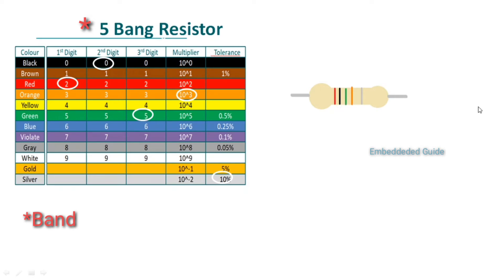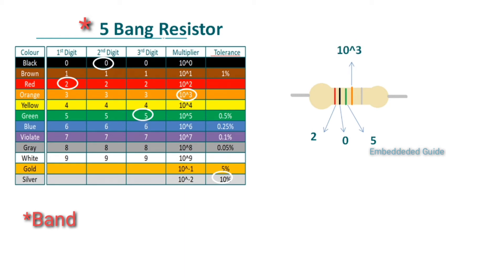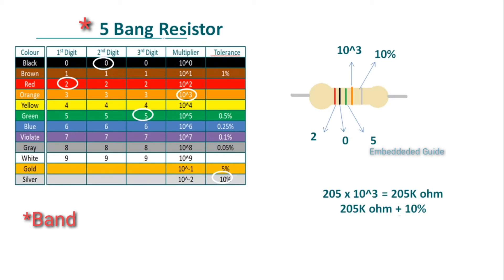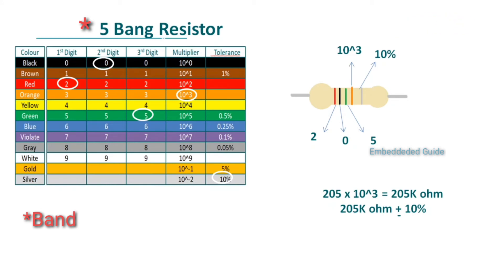Let's check the value of a 5-band resistor example. In this 5-band resistor, we have 5 color bands. The first color band is red — value 2. The next color band is black — value 0. The third color band is green — value 5. The fourth color band is gold, which is the multiplying factor 10 to the power of 3. The fifth color band is silver — the tolerance value is 10%. So the first, second, and third digit values are 2, 0, 5. Next, the multiplying factor is 10^3. That gives 205 kilo ohm plus or minus 10% tolerance.